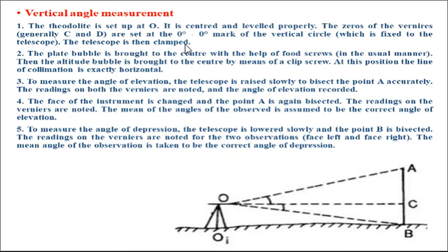When both verniers C and D are adjusted to zero, we clamp the vertical circle so the telescope is exactly horizontal. The plate bubble is brought to the center with the help of the foot screw. Then the altitude bubble is brought to the center by means of the clip screw. At this position, the line of collimation is exactly horizontal.